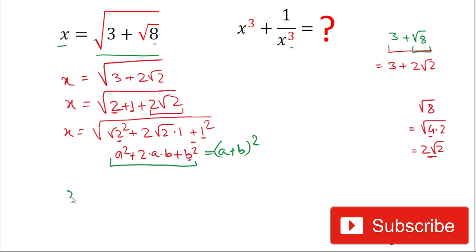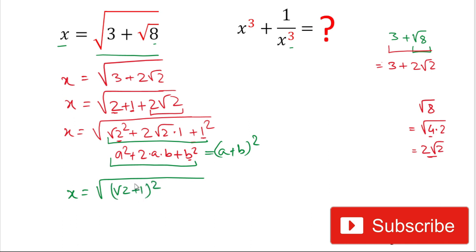So we write x equals square root of square root 2 plus 1, all squared. The square root and square cancel each other, so x equals square root 2 plus 1. This was our first step — we have calculated the value of x.